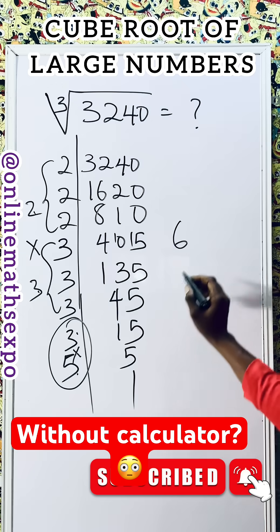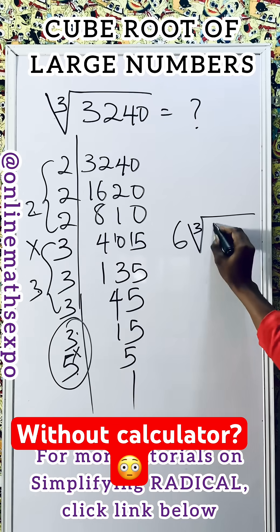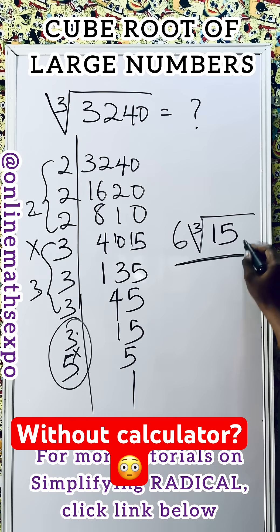Three times five gives us fifteen, so we have six times the cube root of fifteen. This is your answer.